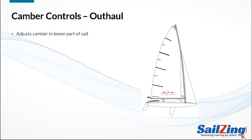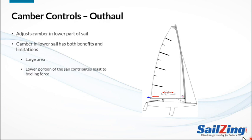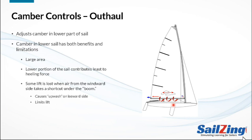Finally, let's talk about the outhaul. As you might expect, the outhaul adjusts the camber in the lower portion of the sail — a tighter outhaul flattens the sail down low. Camber in the lower part of the sail has benefits and limitations. The lower portion is large and has the potential to create lots of lift. Also, powering up the bottom of the sail doesn't contribute as much heeling force as powering up the top. However, power in the bottom of the sail tends to leak under the bottom of the boom as the air tries to take a shortcut to the lower pressure side, which limits the amount of power available from the bottom of the sail.